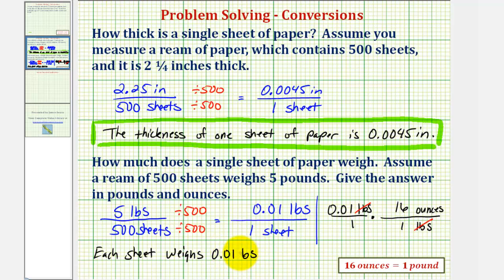Well zero point zero one times sixteen is equal to zero point one six. Therefore each sheet weighs zero point zero one pounds or zero point one six ounces. I hope you found this helpful.